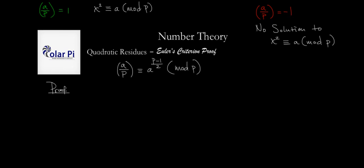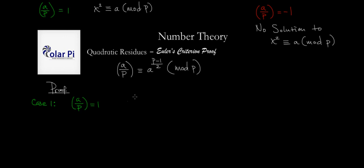I'm going to make two separate videos — Case 1 here, and in a video to follow, Case 2. So let's start with Case 1. Case 1 is when a over p is equal to 1, that is, a is a quadratic residue mod p. In this case, this congruency equation has a solution — let's call that solution x₀. Then x₀ squared has to be congruent to a mod p, which we can rewrite as a is congruent to x₀ squared mod p.